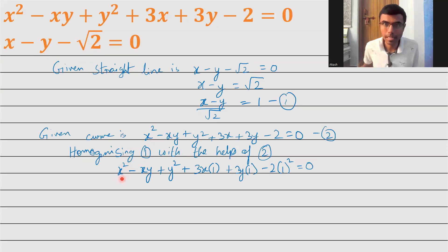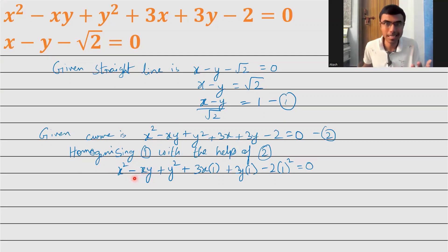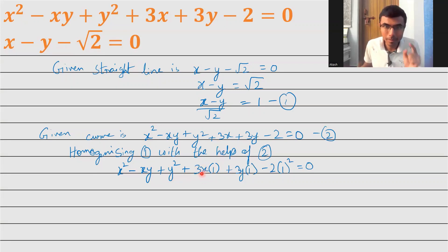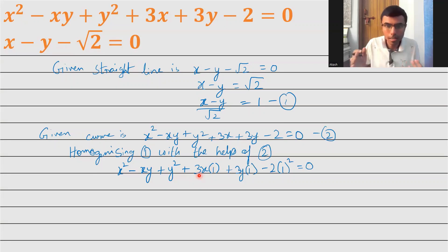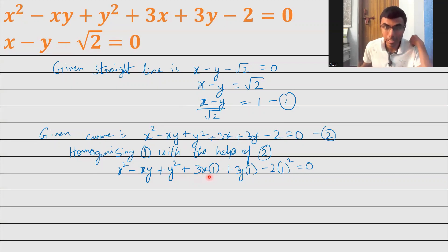Now, what is the degree of x squared? It's 2. Likewise, degree of xy is 1 plus 1, which is 2. Degree of y squared is also 2. But the degree of 3x is only 1. In homogenization, we make sure that all terms have degree 2. That's why 3x needs one more degree — so I multiply by 1. Similarly, 3y into 1, since degree of y is 1, I need one more to make it degree 2.